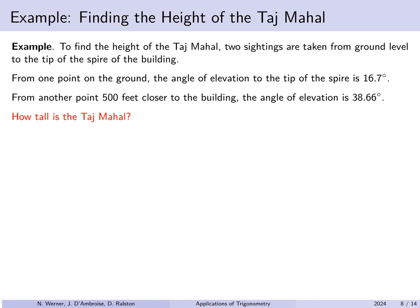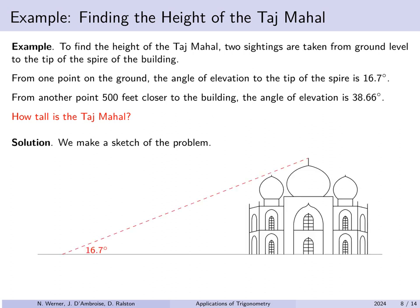Next, to find the height of the Taj Mahal, two sightings are taken from ground level to the tip of the spire. From one point, we measure an angle of elevation of 16.7 degrees. We then walk 500 feet closer and measure a new angle of elevation of 38.66 degrees. This is a classic surveying problem: measure an angle of elevation, walk directly towards the object a known distance, and measure a new angle of elevation. Here is a sketch — from a certain point we measure 16.7 degrees, then walk 500 feet directly towards the building and measure 38.66 degrees.